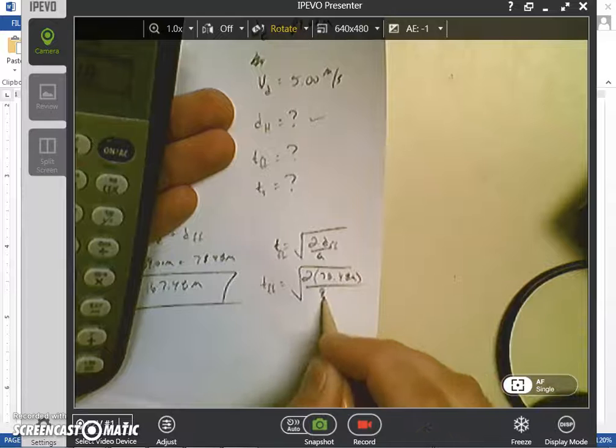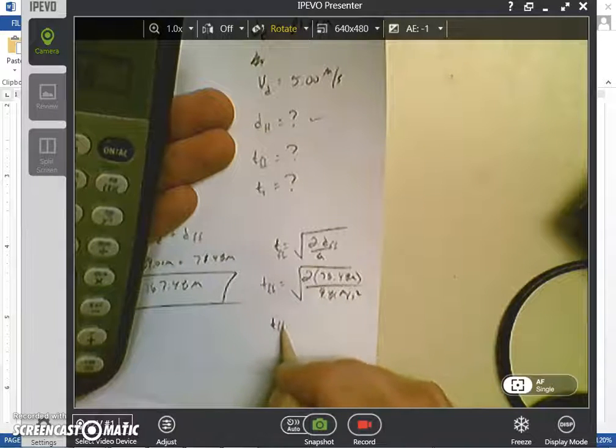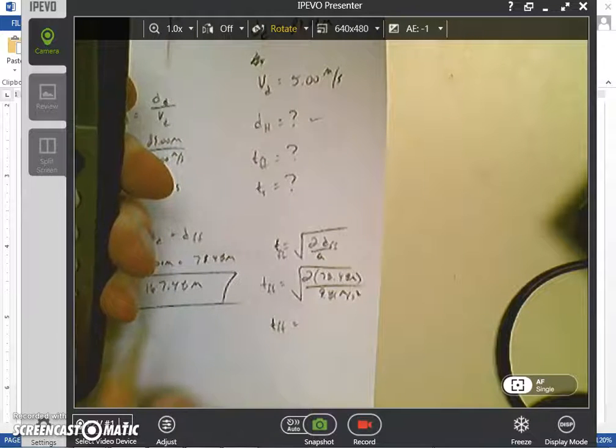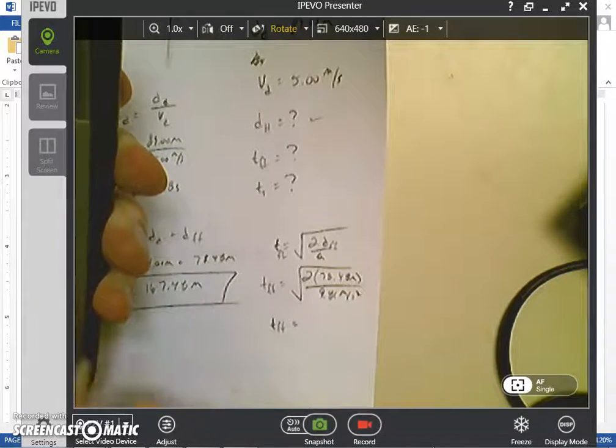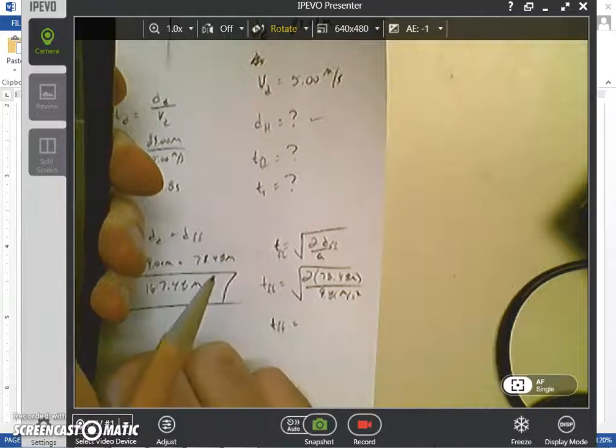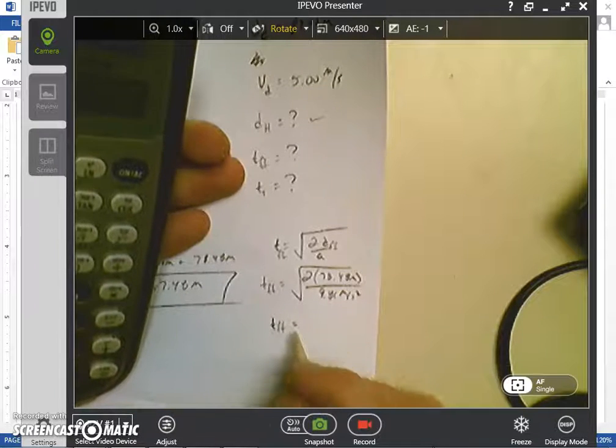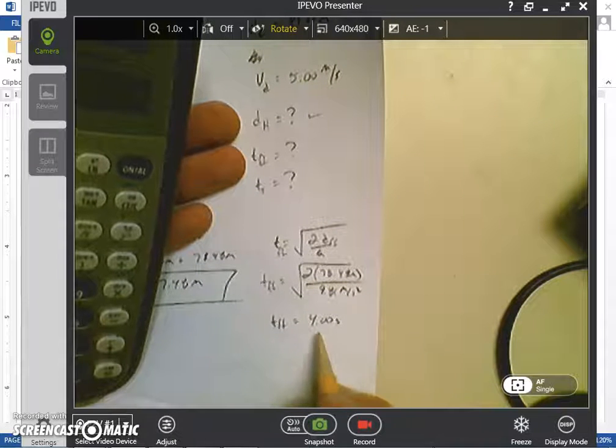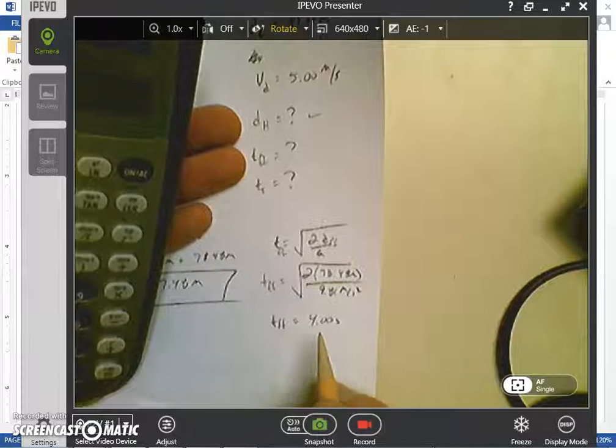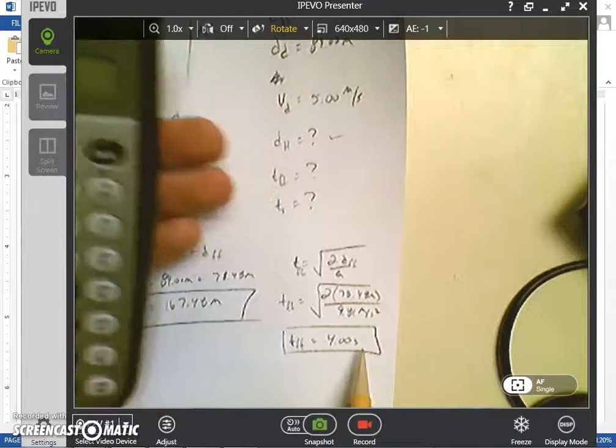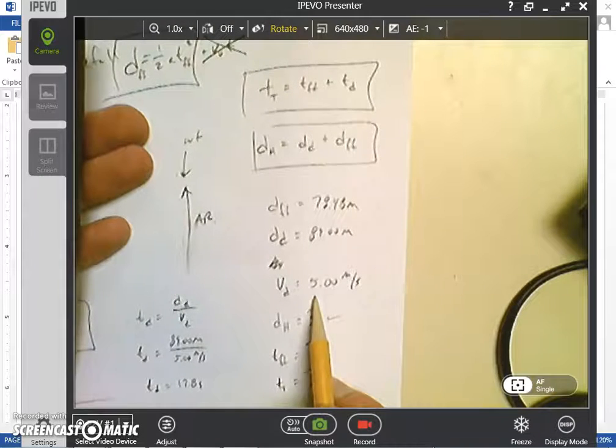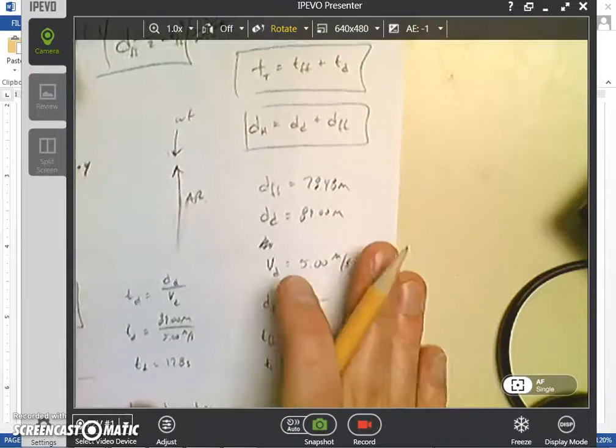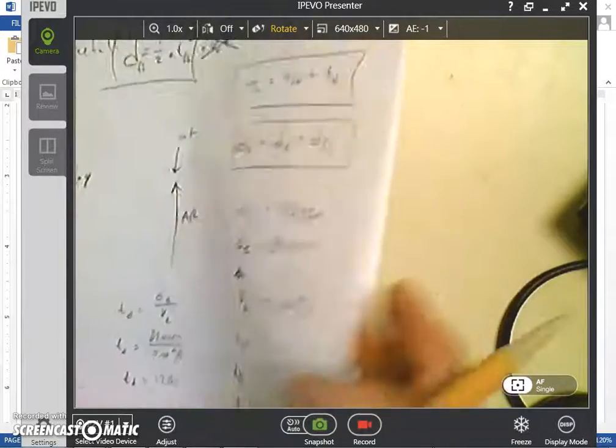So freefall time equals the square root of 2 times 78.48 meters, all over 9.81 meters per second squared. So if I have 2 times 78.48 divided by 9.81, take the square root. I'll give you a hint, a lot of these freefall times are full number of seconds. So, that's fairly common, that it comes out that way, and the velocities for deployment are usually whole number of velocities. So those are a good way to check. I've noticed that just over the years.